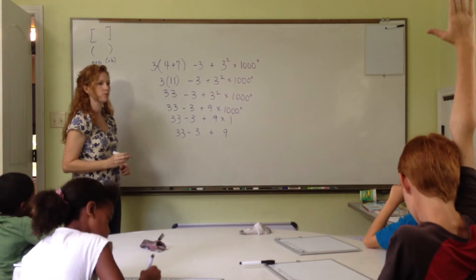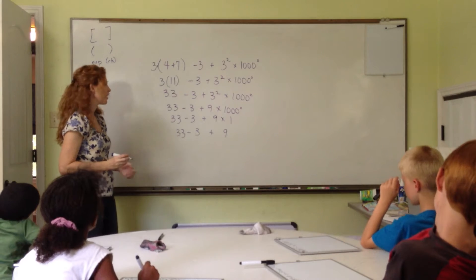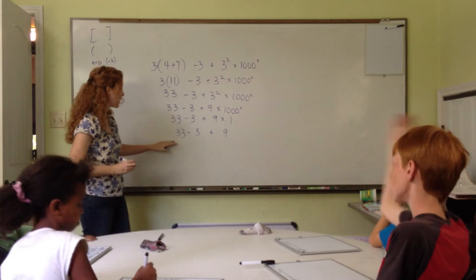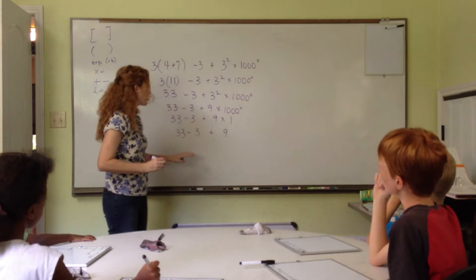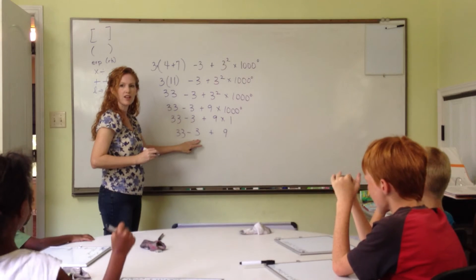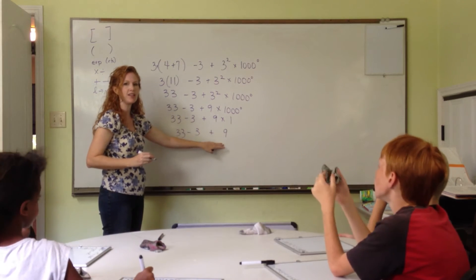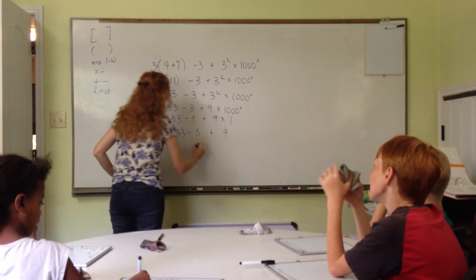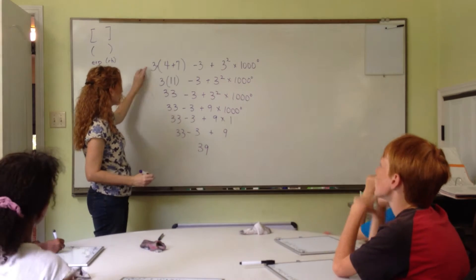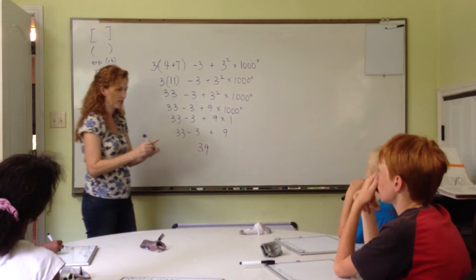So, now what do we do? 33 minus 3. Okay. So, now all we have left are add and subtract. And so, we can just add and subtract going from left to right. So, what is 33 take away 3? 30. And 30 plus 9? 39. It's 39. Good job. So, that is our answer. We've simplified our expression from this to this following the order of operations.